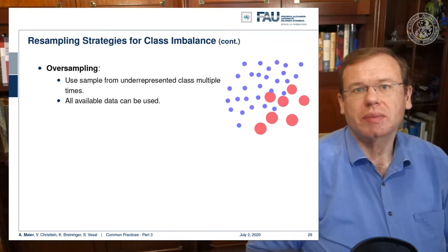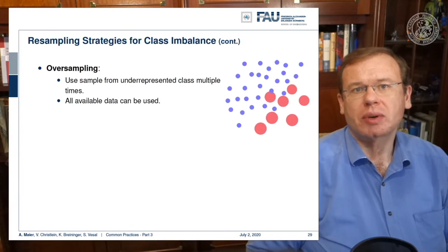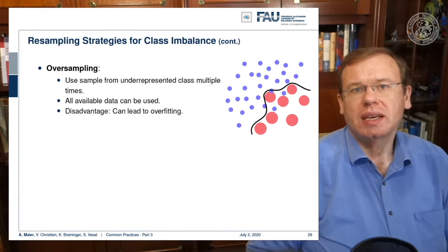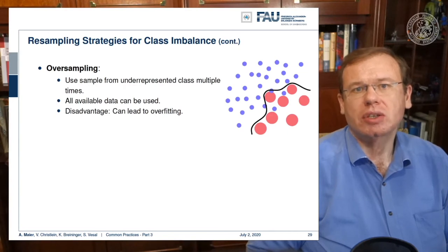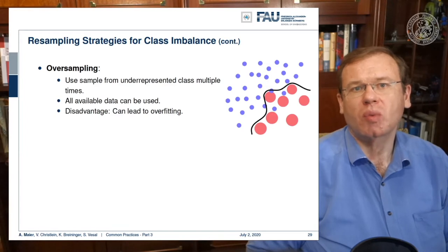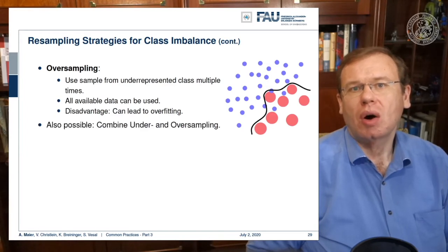So another technique is oversampling — you can simply sample more often from the underrepresented classes. In this case you can use all of the data. The disadvantage is that it can lead to heavy overfitting towards the less frequently seen examples.